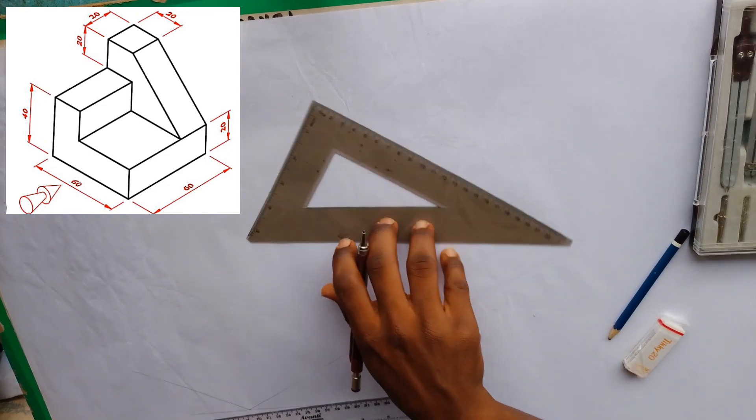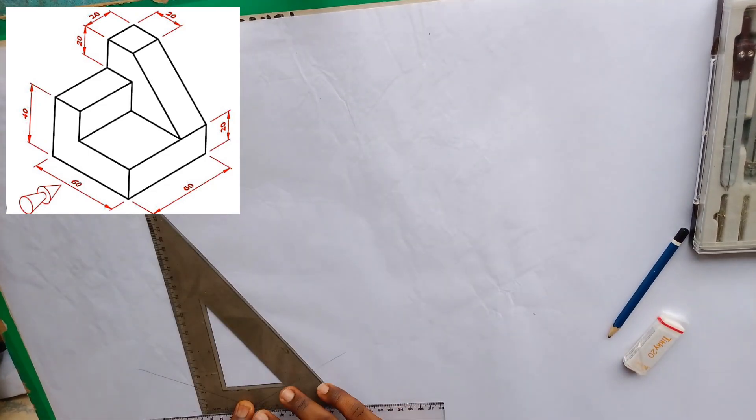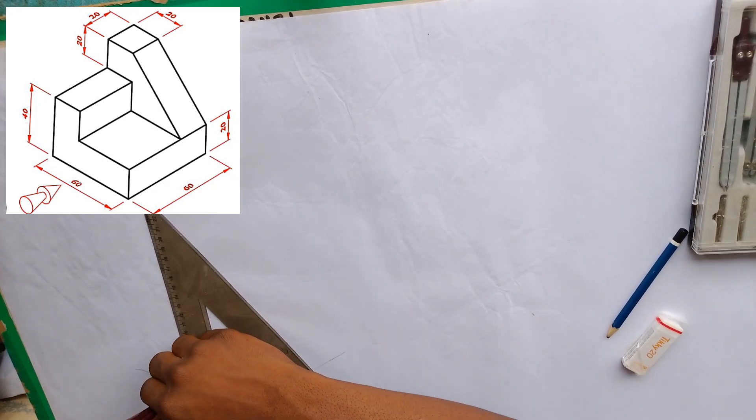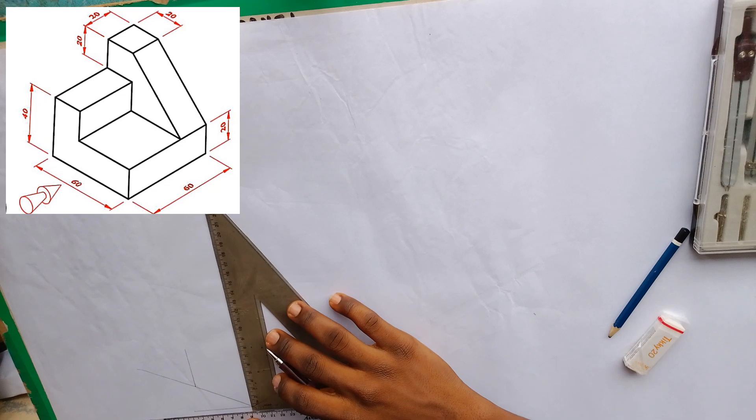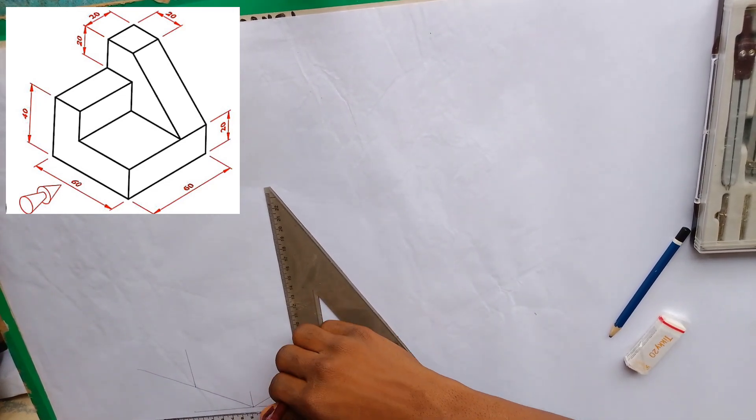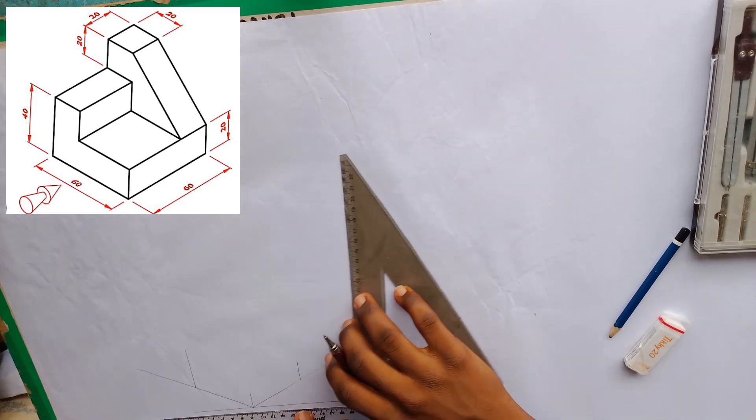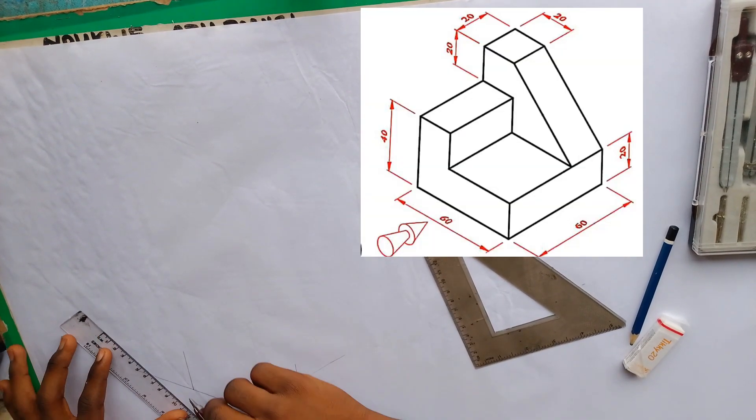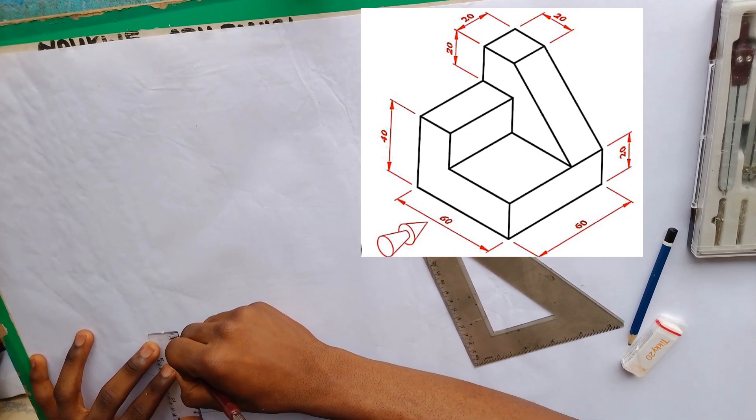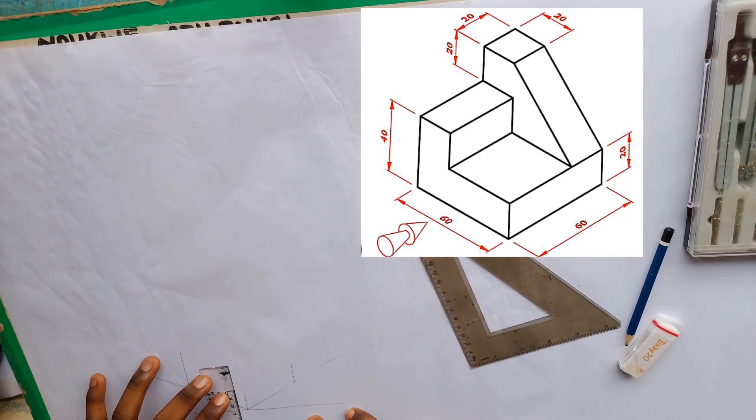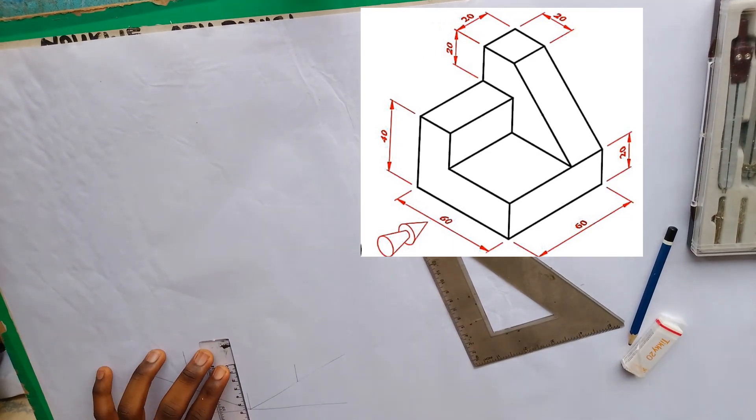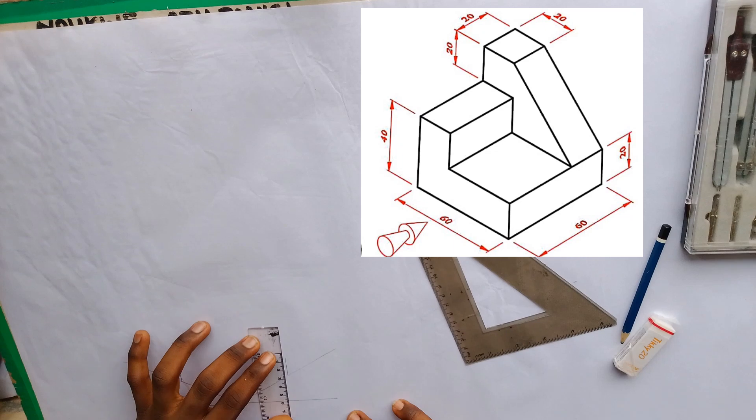Next, we will draw a vertical line with our set square. Here is 90 degrees. In our diagram, from here to here is 40. We'll mark that from here to here is 20. And from here to here is also 20.